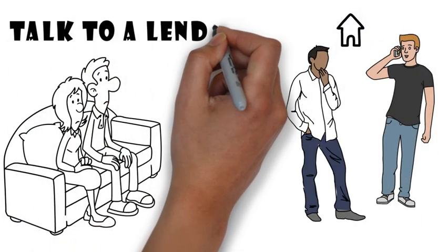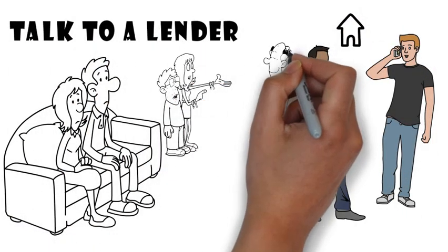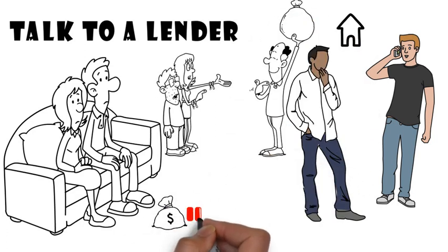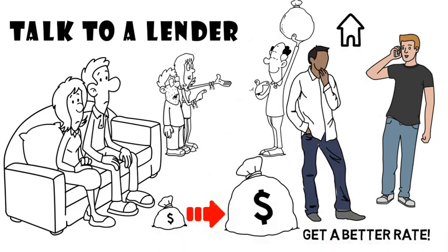Jen says to talk to a lender six months before home shopping in case there is anything you need to fix on your credit to get a house or even get a better rate.